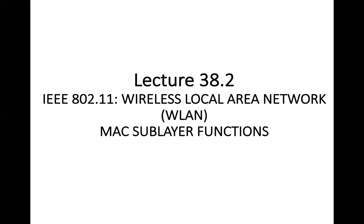Welcome to yet another session on Computer Networks. Today's topic is IEEE 802.11 MAC sublayer functions. In our previous lecture we discussed the IEEE 802.11 physical layer functions. Today we will discuss the MAC sublayer functions of IEEE 802.11. The difference between wired and wireless networks is basically on the first two layers of the OSI model — physical layer and data link layer. From network layer upwards, the functionality remains the same.